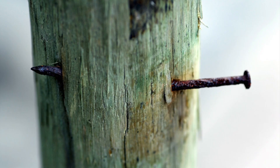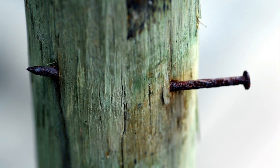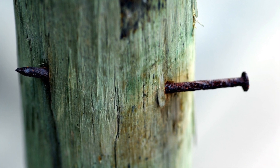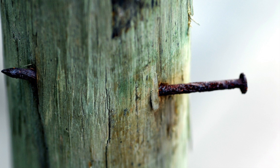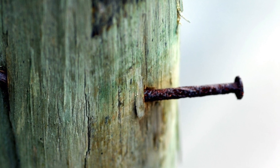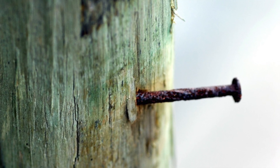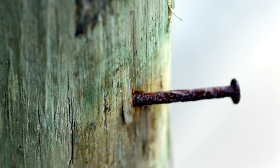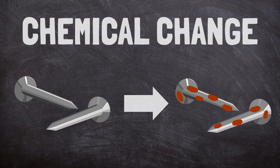Chemical changes create new materials. When a nail rusts, iron changes into iron oxide. A whole new type of matter has formed. This is a chemical change.